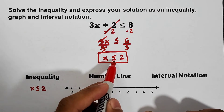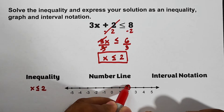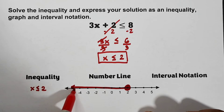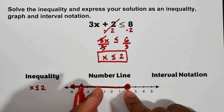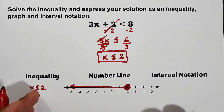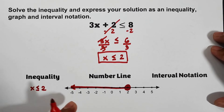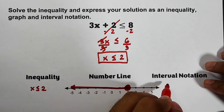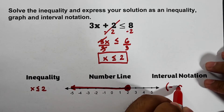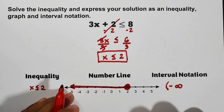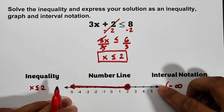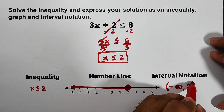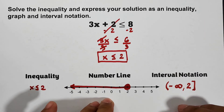Since the symbol is less than or equal to, we use a solid circle at 2 because 2 is included. The direction is going left. So the number line shows x is less than or equal to 2. For the interval notation: the critical value 2 is on the right side, and going infinitely left we use negative infinity with a parenthesis. Since 2 is included, we use a bracket at 2. The interval notation is (-∞, 2].